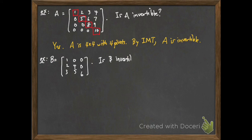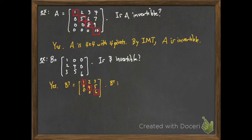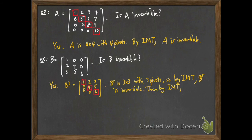Let B be a 3 by 3 matrix — is B invertible? You can use the invertible matrix theorem again. Take the transpose of B; you get a matrix that's in echelon form with three pivots, so B transpose is invertible by the invertible matrix theorem. And then by the invertible matrix theorem, that implies B is invertible as well.